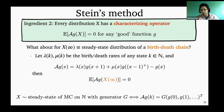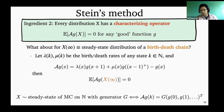The generator is this massive matrix, G(x) is this massive vector, and you take this linear transformation. So now we have our characterizing operator for the Markov chain steady state distribution. And here is the magic of Stein's method.